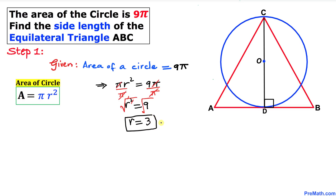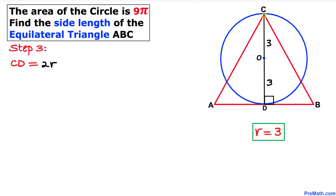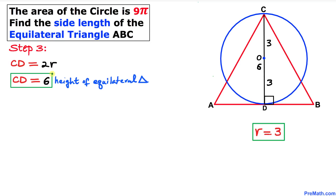Since the radius is always positive, the radius of this circle is 3. So CO = 3 and OD = 3 as well. Now let's recall the tangent to a circle theorem: the angle between a tangent and a radius is always 90 degrees — they are perpendicular. Since OD is the radius and AB is the tangent line, they are perpendicular. The length of line segment CD is simply twice the radius: 3 + 3 = 6. So CD = 6, and this is the height of equilateral triangle ABC.